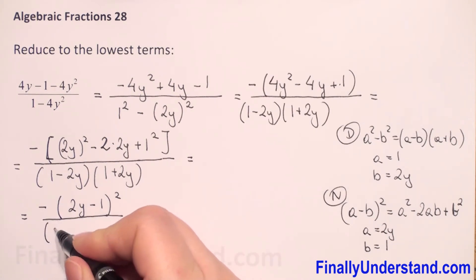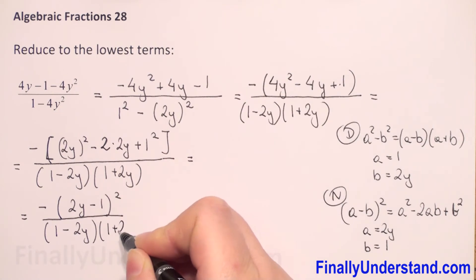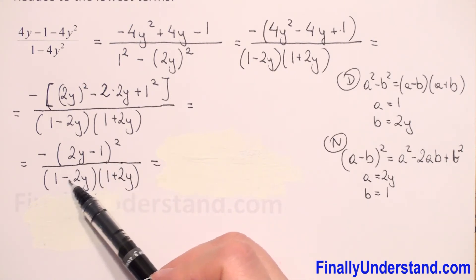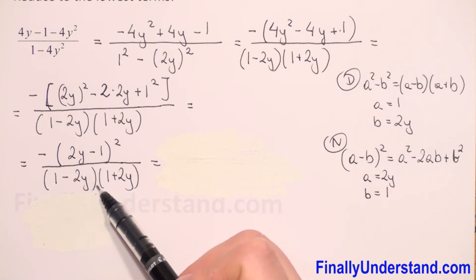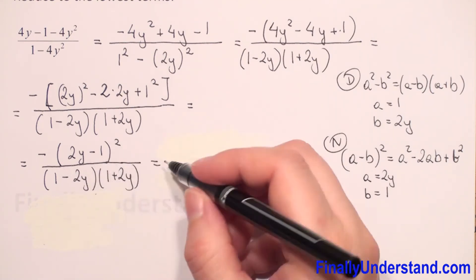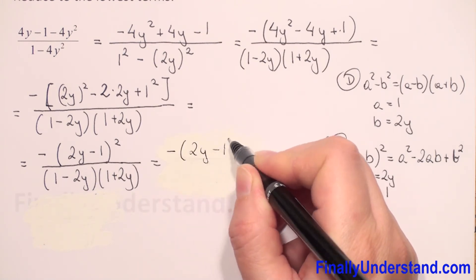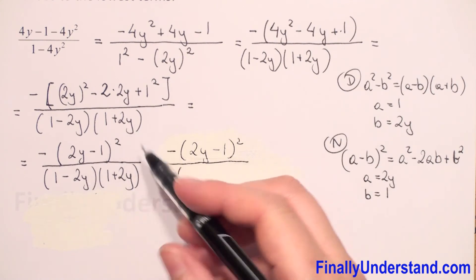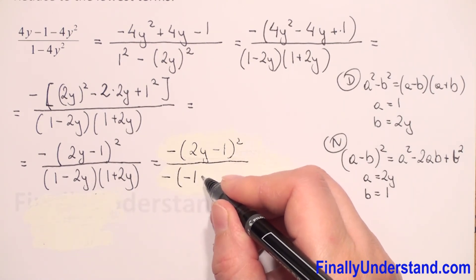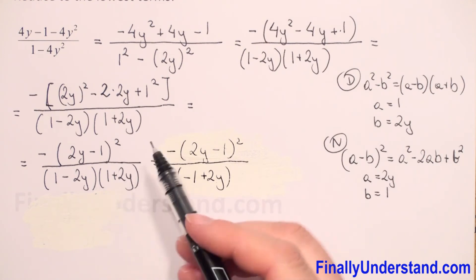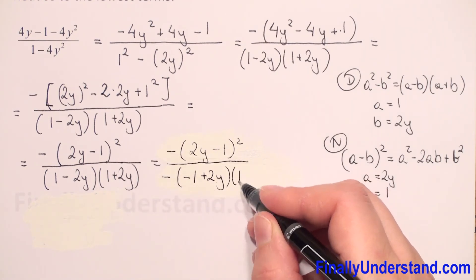Our denominator is 1 minus 2y times 1 plus 2y. Since the numerator contains 2y minus 1 in parenthesis and the denominator has 1 minus 2y, we factor out negative 1 from the first parenthesis in the denominator to get the same expression as in the numerator. Factoring gives negative times negative 1 plus 2y, since negative 1 times negative 1 is 1 and negative 1 times 2y is negative 2y. The rest we copy as 1 plus 2y.